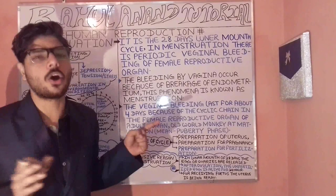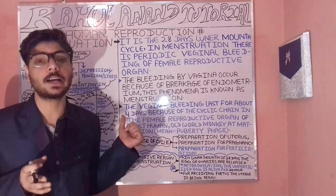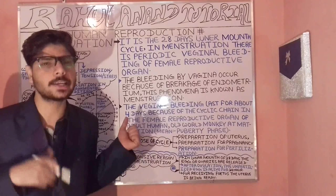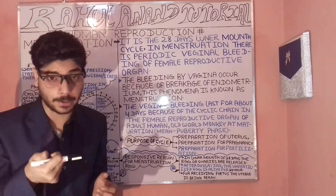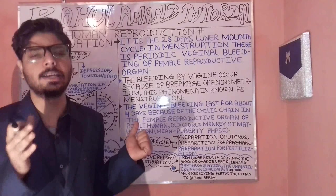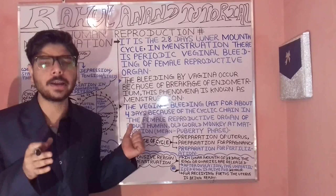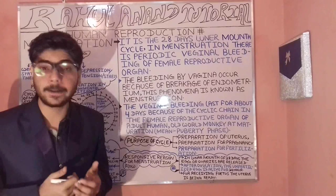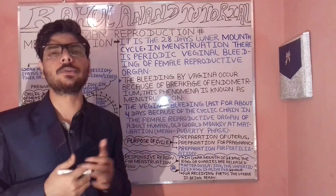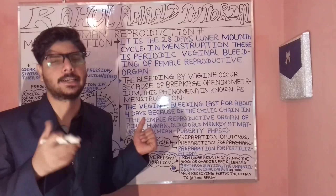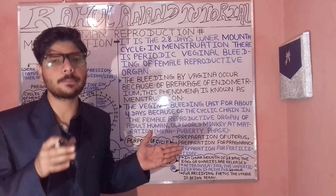When we talk about the cause of menstruation flow, we must understand that in this case, the implantation process will not be employed. Implantation is the process by which the egg from the ovaries is attached to the endometrium. The endometrium acts as a wall-like projection in the female reproductive organ.